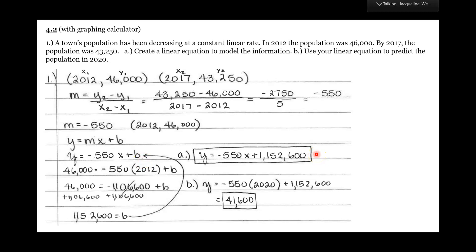The second thing it said was: use your linear equation to predict the population in 2020. What is 2020 — is it x or y? X. So let's take 2020 and put it in the place of x, and that gives us 41,600 for our y value.